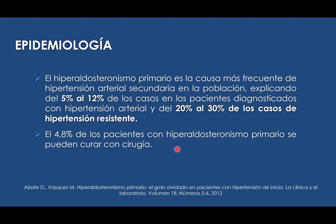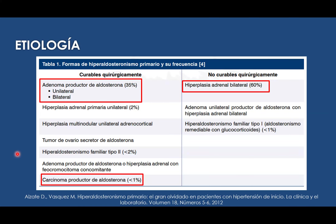El 4.8% de los pacientes con hiperaldosteronismo primario se pueden curar con cirugía. Dentro de la etiología, tenemos patologías que pueden ser tratadas quirúrgicamente y aquellas que no. El 35% está generado por un adenoma productor de aldosterona, que puede ser unilateral o bilateral según su causa. Dentro de las patologías no curables tenemos la hiperplasia adrenal bilateral que representa más del 60% de las causas diagnosticadas.